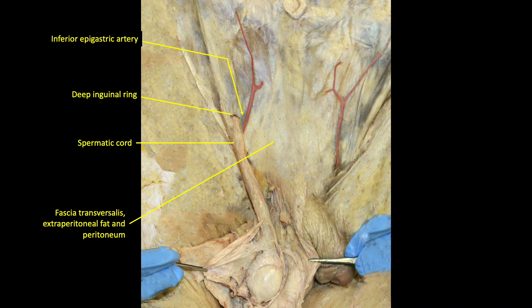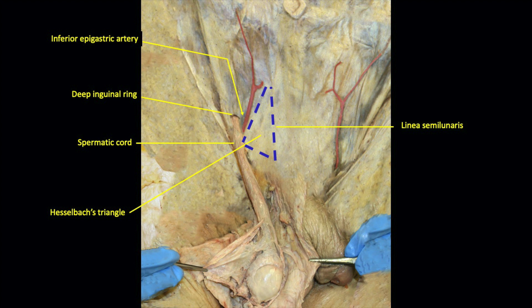Note the important relationship of the deep inguinal ring to the inferior epigastric artery. If a hernia escapes the abdomen via the deep inguinal ring and enters the inguinal canal, it is an indirect inguinal hernia, with the neck of the hernia located lateral to the inferior epigastric artery. In contrast, if the hernia bulges out medial to the inferior epigastric artery, it is a direct inguinal hernia. Both types are indistinguishable in external appearance, though their membrane coverings differ. The direct hernia is described as a weakness or outpocketing of Hesselbach's triangle.